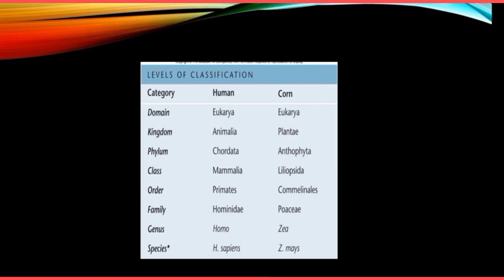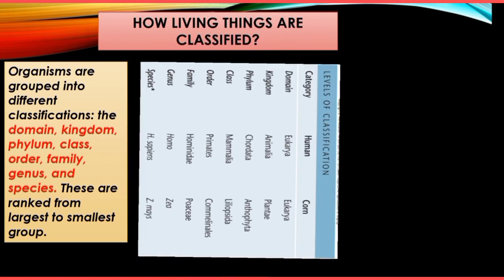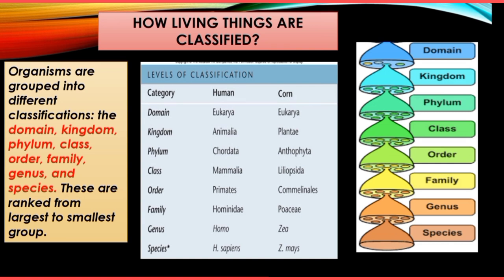We start with domain, then kingdom, phylum, class, order, family, genus, and species. Starting from the bottom: a group of similar species forms a genus, genera form a family, and so on upward. Domain has the most organisms; species has the most similarities. Remember this order — it is important.